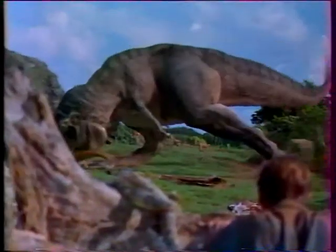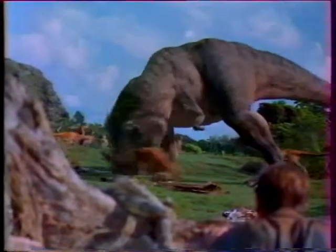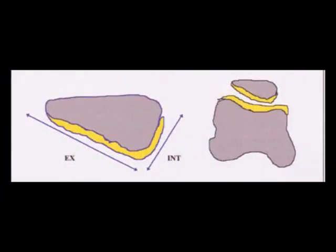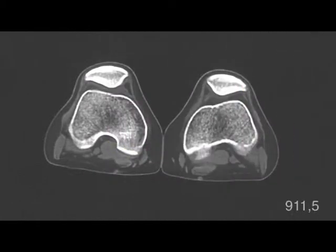Des travaux récents ont montré que les formes des massifs osseux externes du fémur et de la rotule étaient totalement liés au type de déplacement. Chez l'homme moderne, la rotule présente une forme triangulaire à base supérieure aplatie. Sa face postérieure est occupée par deux facettes articulaires concaves asymétriques : la facette externe est plus grande que l'interne. Ces deux facettes sont en rapport avec les versants condyliens internes et externes du fémur, séparées par une crête qui coulisse dans la gorge trochléenne. La facette interne présente une empreinte en rapport avec les contacts entretenus avec le condyle interne lors des mouvements d'extrême flexion.